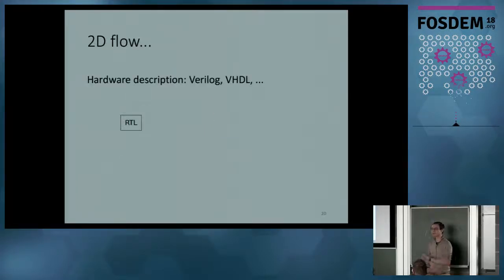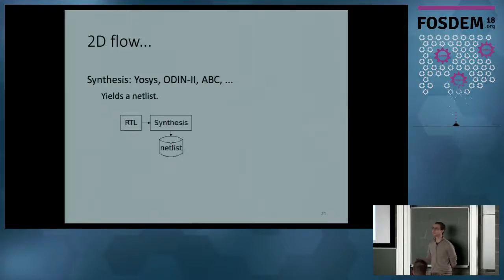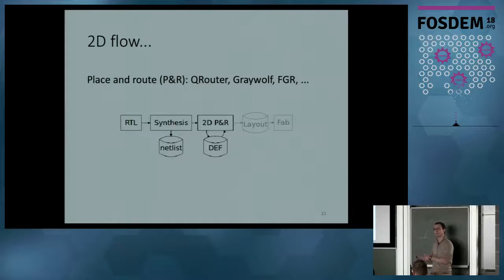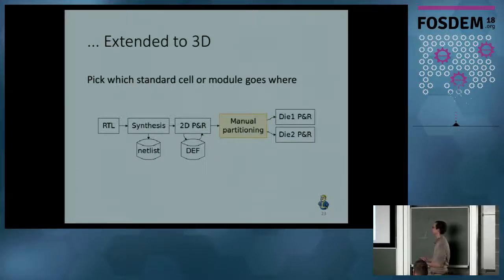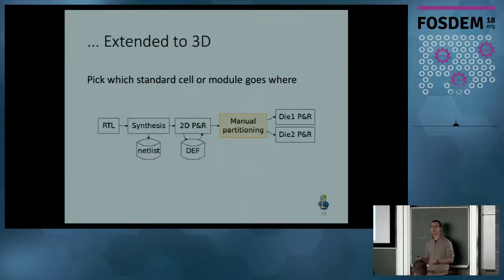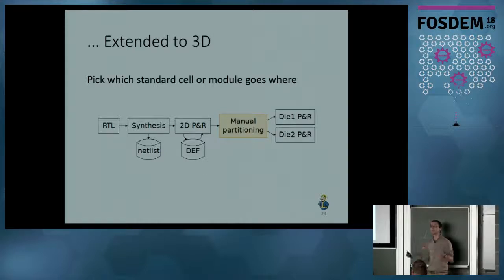For the rest of the presentation, we'll see how we can transform a 2D IC into a 3D IC using existing 2D flows and what blocks we need to add. In the 2D flow, RTL describes your design, then you synthesize it to generate a netlist, which is placed and routed. If you want to extend this into a 3D flow, one approach is to manually partition the design — that is, pick which gates or logic blocks go on which die — but you would need a very clever designer to interrupt the flow, manually partition, and then re-place-and-route each die. That is a bit inefficient, so we want to automate this manual partitioning to have a full automated 3D EDA flow.